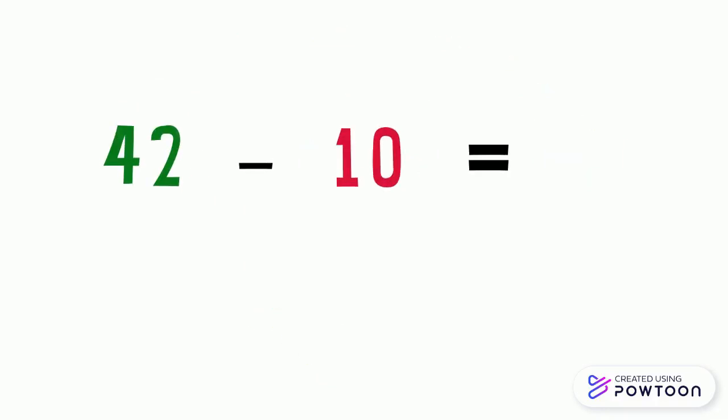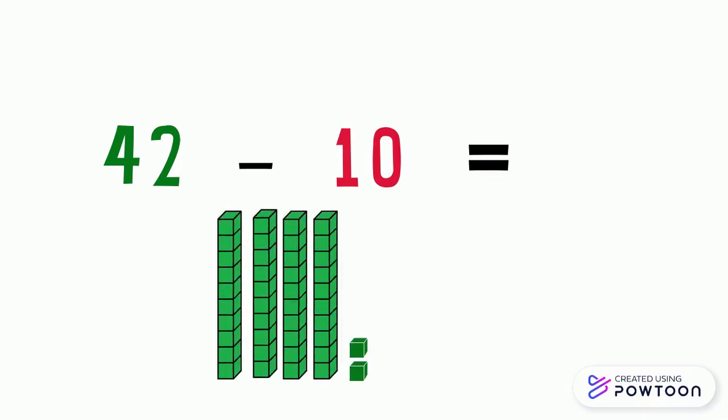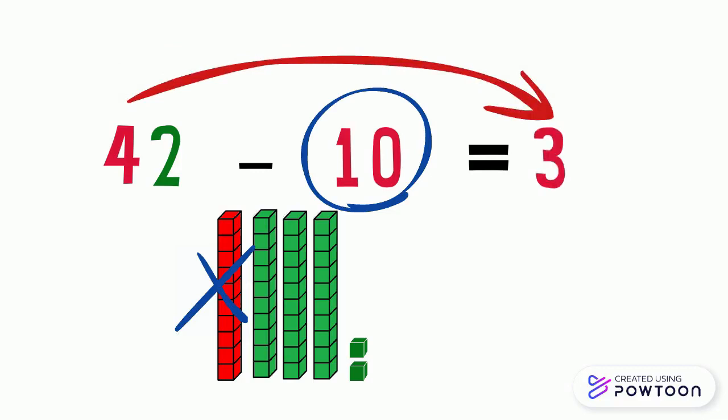Let's take another example. 42 minus 10. In the number 42, there are 4 tens and 2 ones. To subtract 10, we should take away 1 ten from the tens digit, which is 4. So we are left with 3. The tens digit is going down by 1. And the ones digit didn't change.